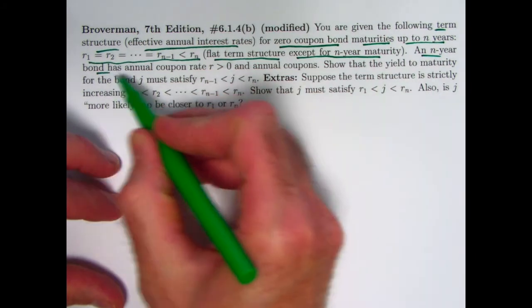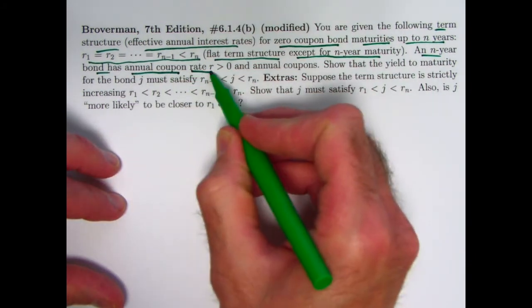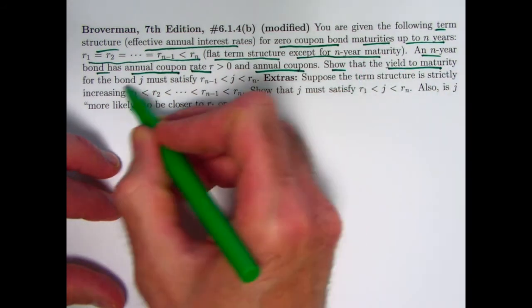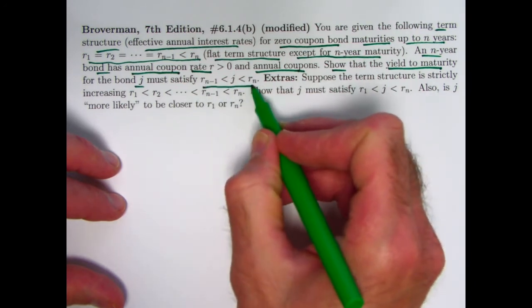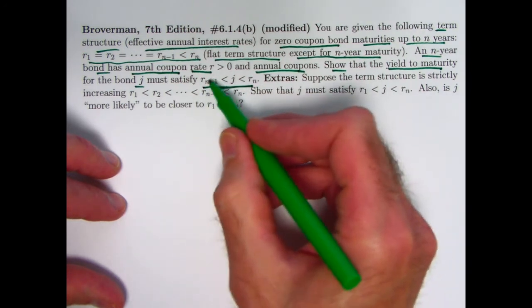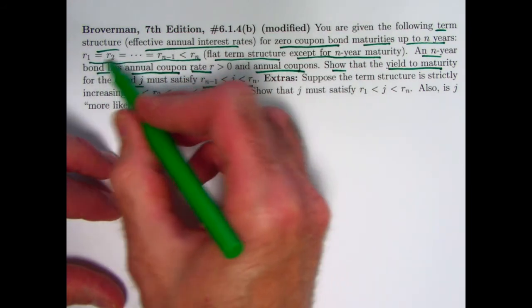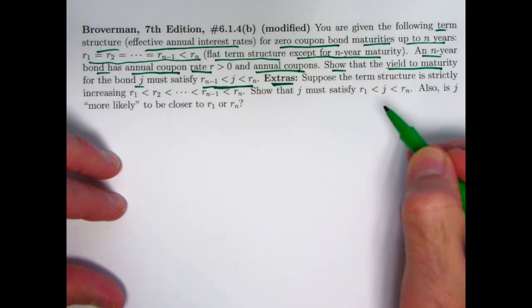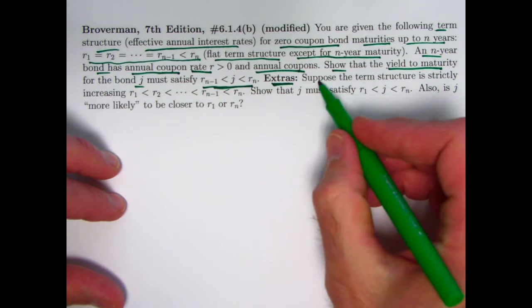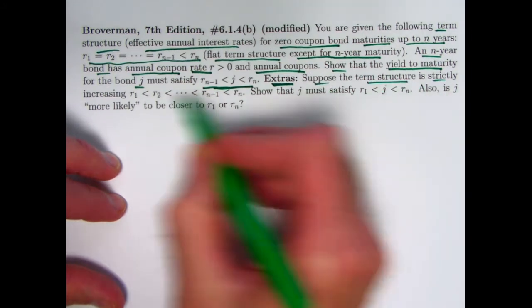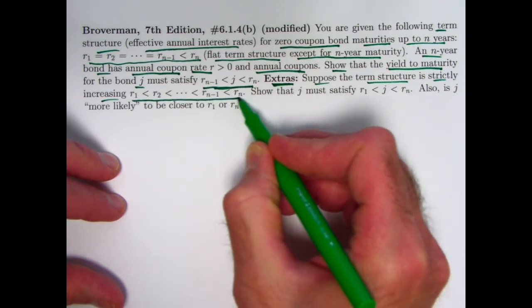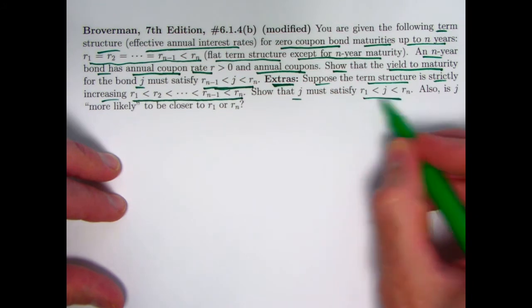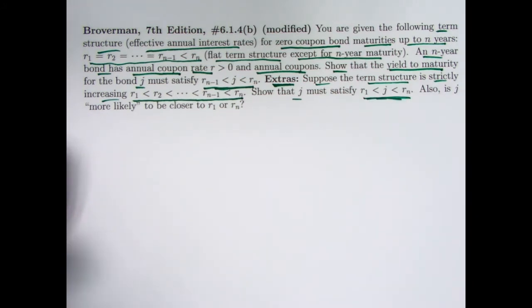An n-year bond has coupons — it's got an annual coupon rate of r with annual coupons. The goal is to show that the yield to maturity, j, must satisfy this set of inequalities. Since r_{n−1} is equal to all the other r's before that point, you could put those in here too. For just a little bit more effort, you could also think about what happens when the term structure is strictly increasing, with strict inequalities all the way along. You can still show that j must satisfy this set of inequalities — it's basically the same kind of argument.